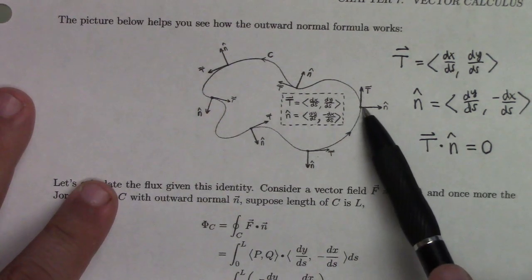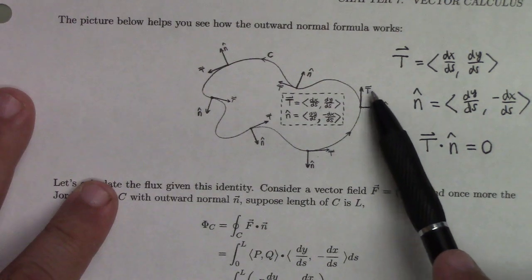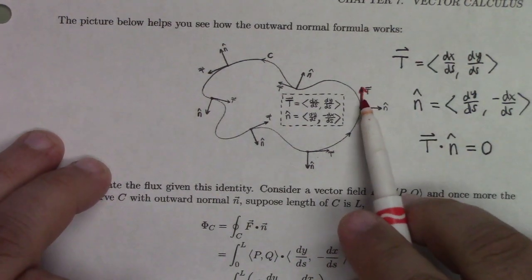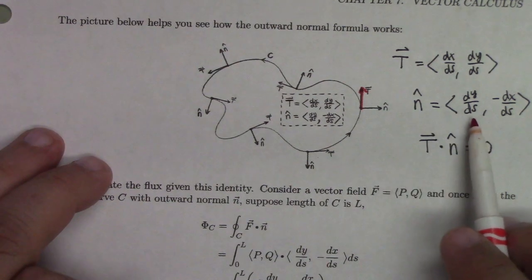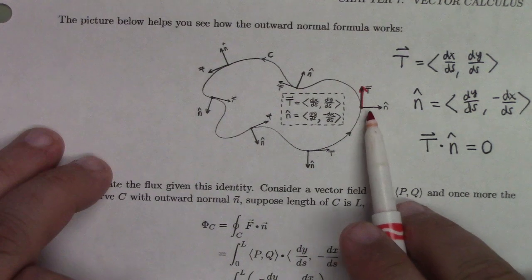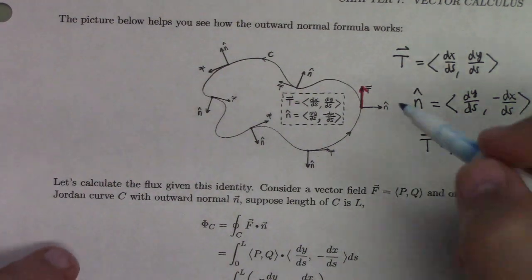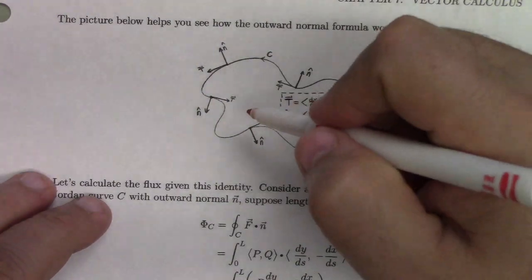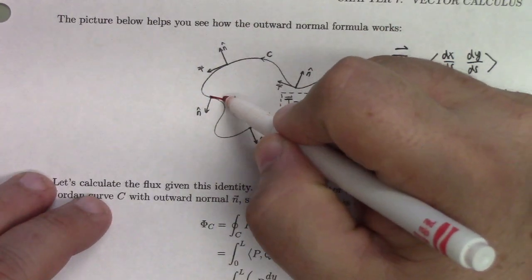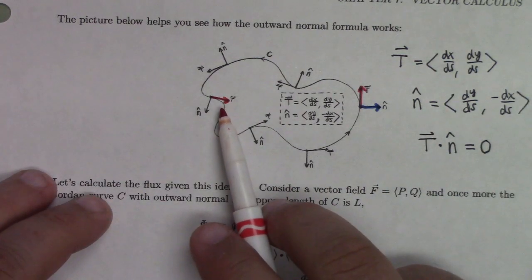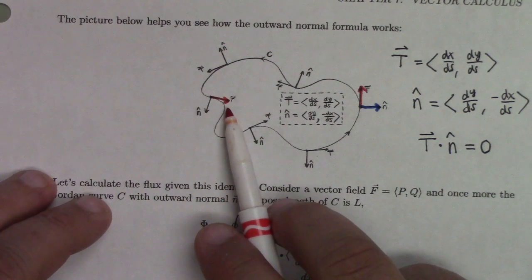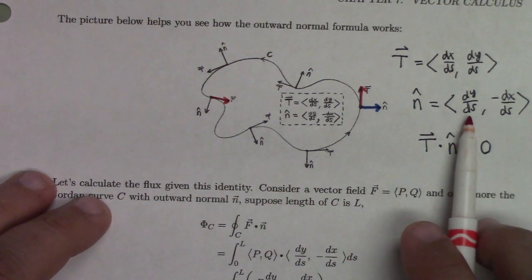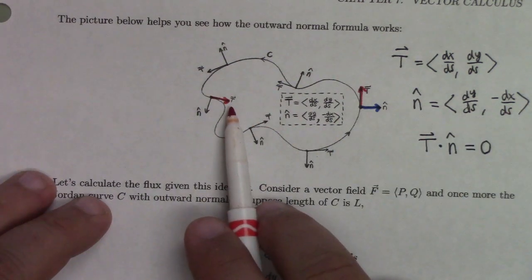When we calculate the flux, it's the integral of F dot n-hat ds. Since n-hat = (dy/ds, −dx/ds), we take the dot product and get p(dy/ds) − q(dx/ds). This can be written as the integral of the vector (−q, p) dotted with the unit tangent with respect to arc length. So to calculate the flux of the vector field (p, q), we integrate p dy − q dx — a line integral, not p dx + q dy. This is quite neat.